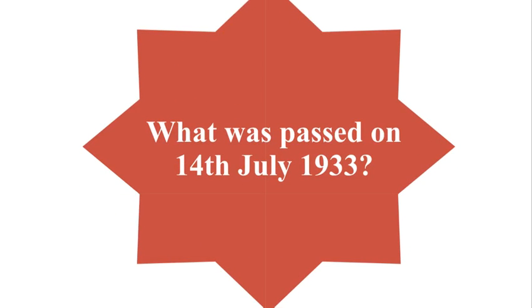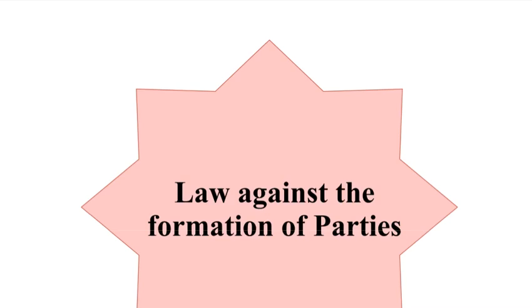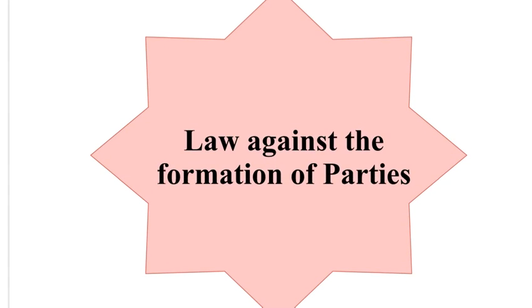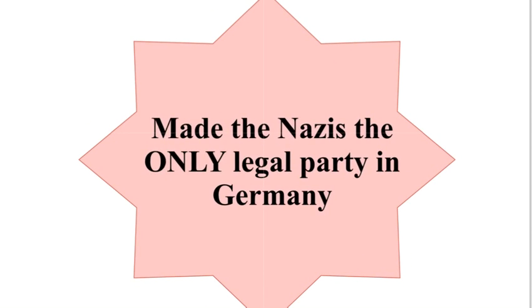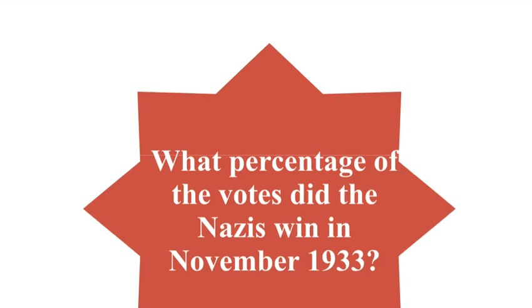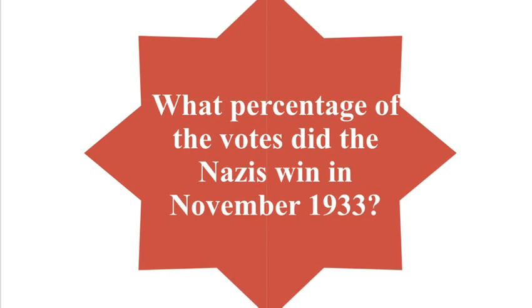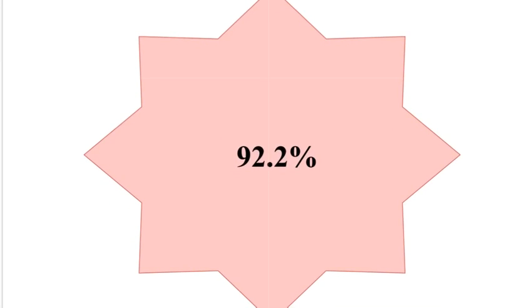What was passed on the 14th of July 1933? The law against the formation of parties. What was the impact of this law? It made the Nazis the only legal party in Germany. What percentage of the votes did the Nazis win in November 1933? 92.2%.